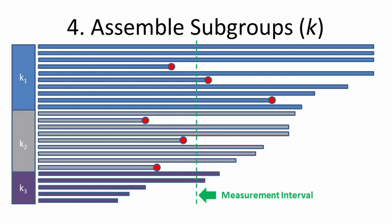Next, assemble your subgroups, designated by k. Each subgroup must have the same number of samples, n. Note that you must wait for all members of the subgroup to meet the minimum measurement interval before you plot the next data point.